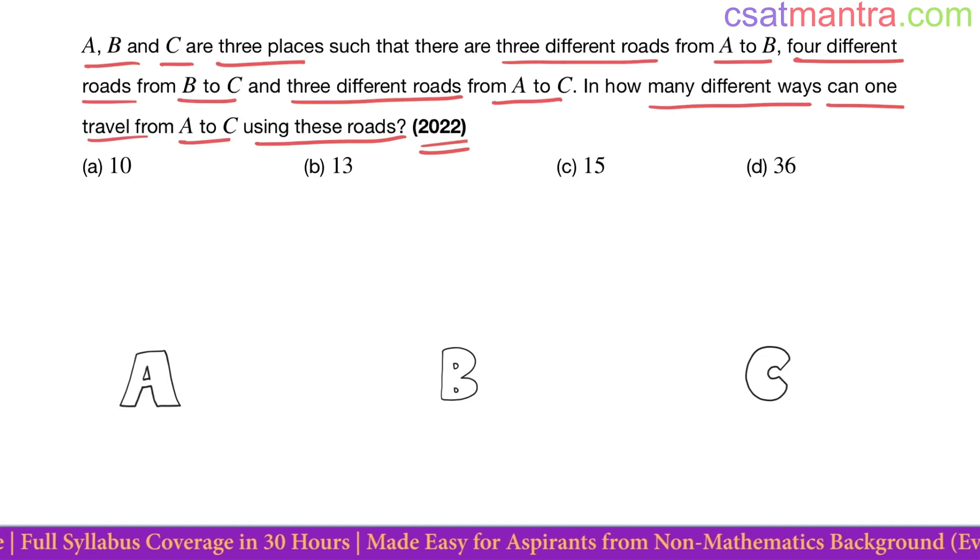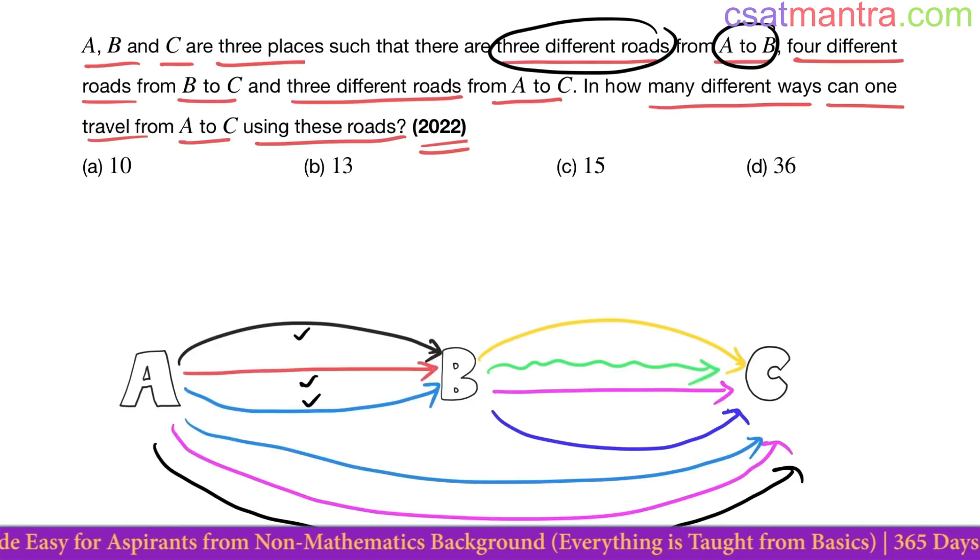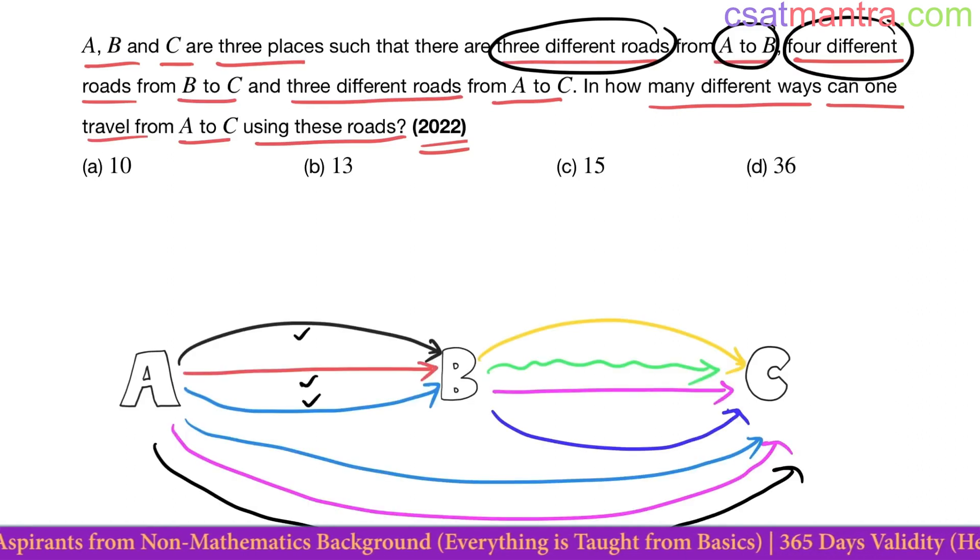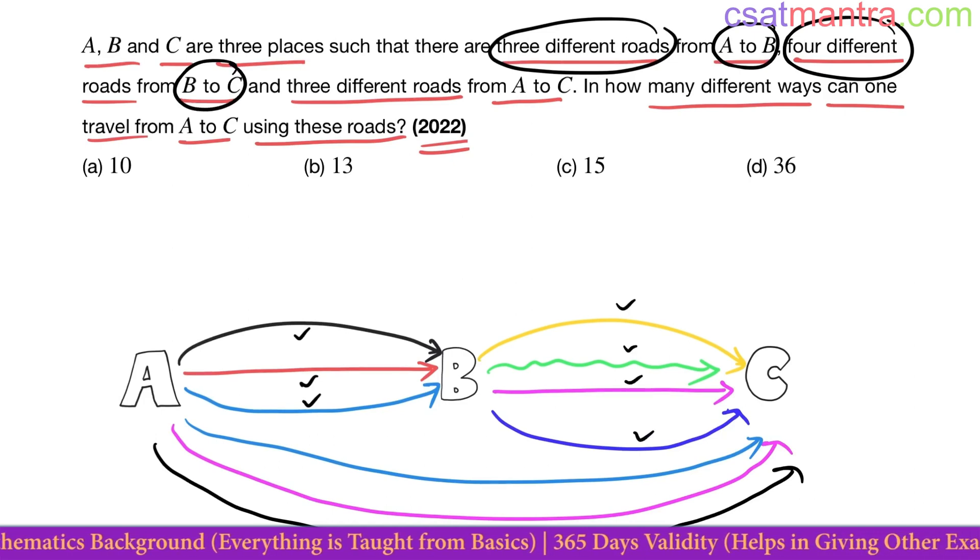The question is based on the basic definition of permutation and combination. There are three different roads from A to B. These are three different roads from A to B, and four different roads from B to C. These are those four different roads.